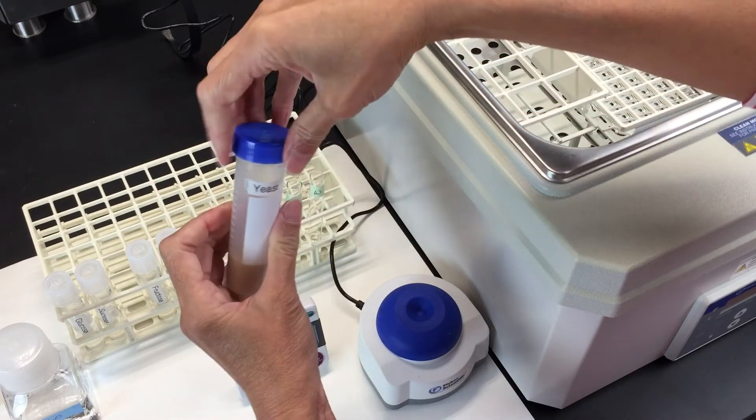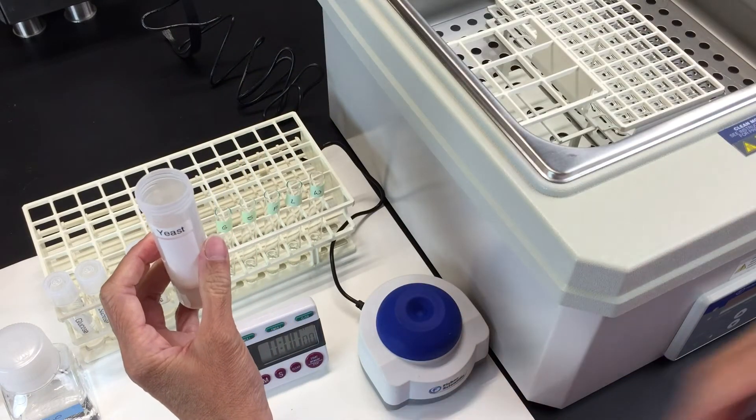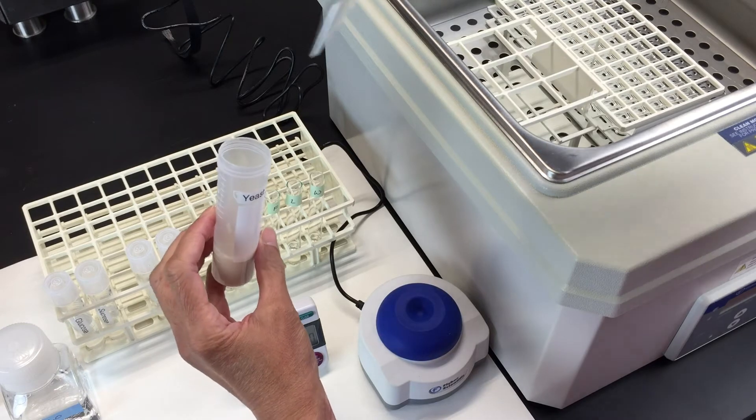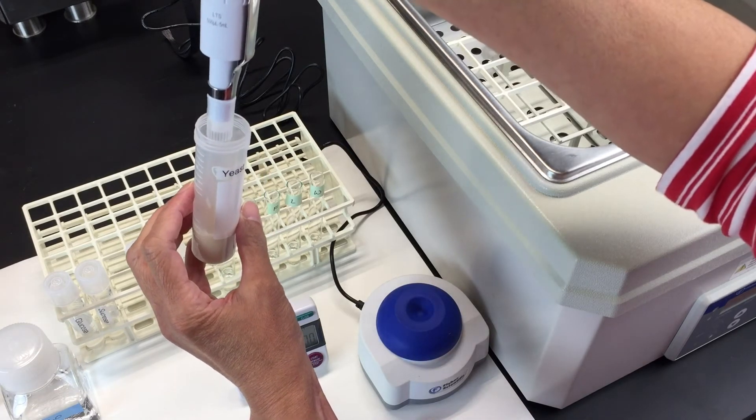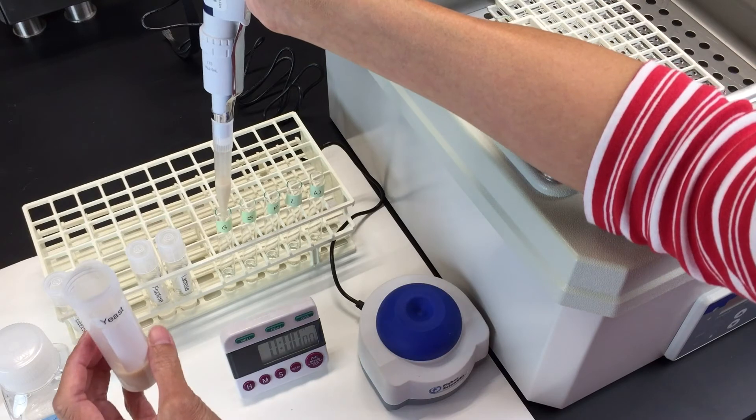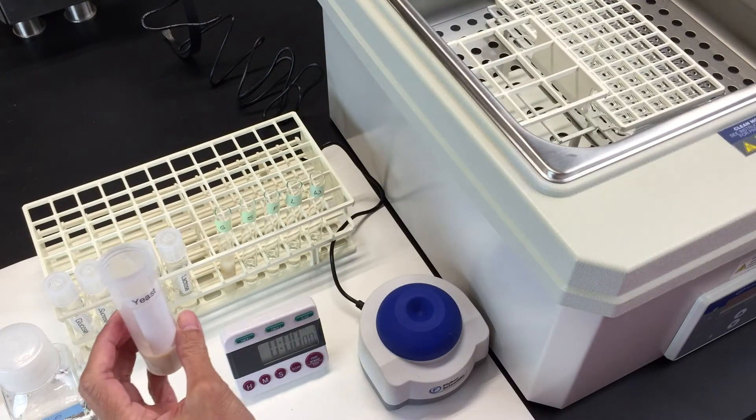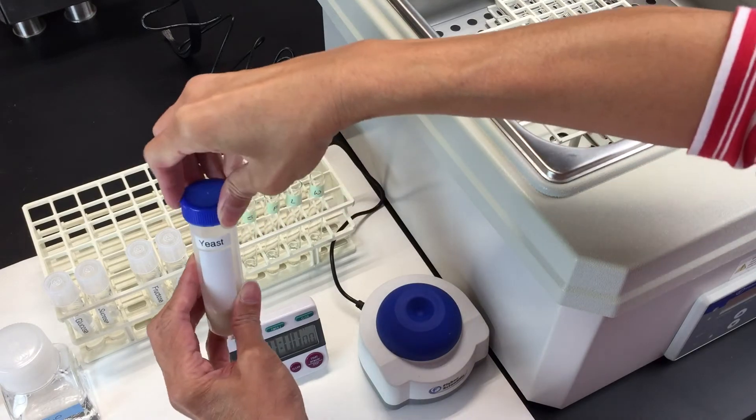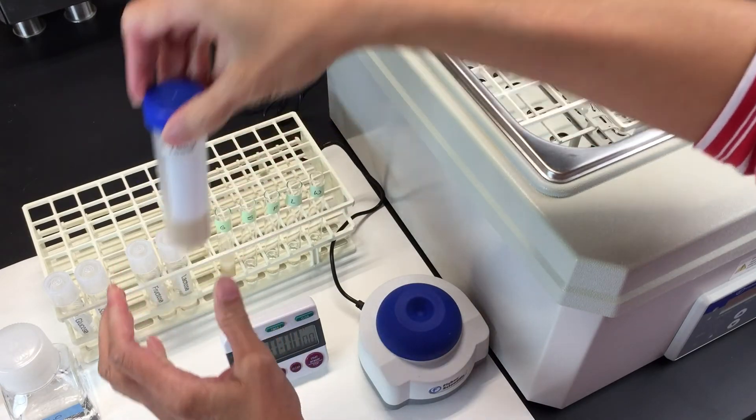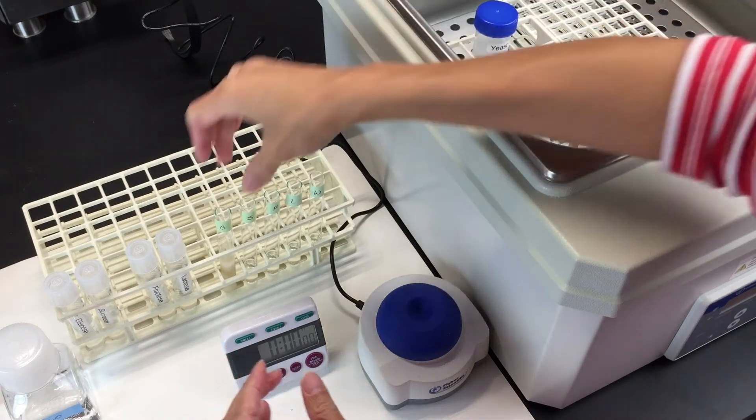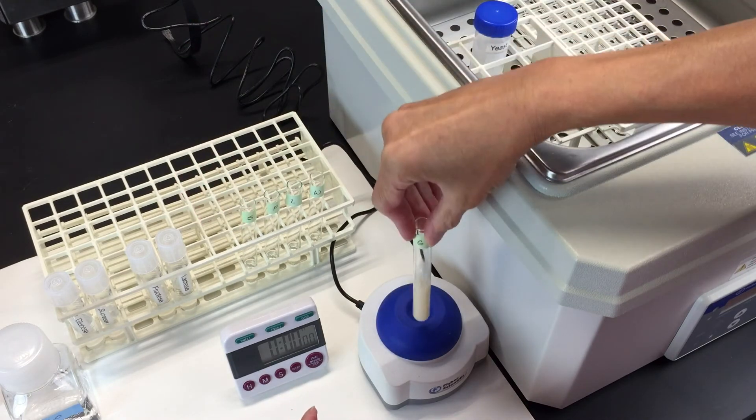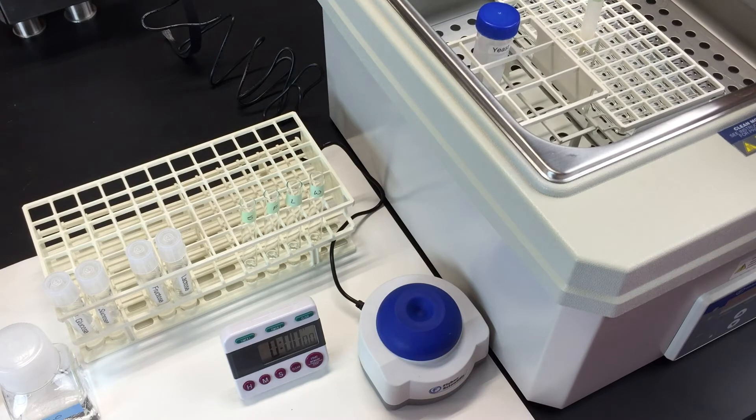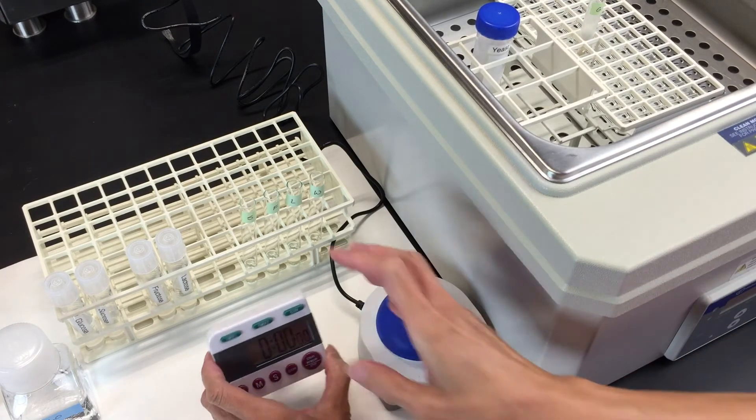You want to start with one tube at a time. So start with your glucose tube, and you want to take two milliliters of your yeast solution and put it into your glucose tube. Put your yeast culture back into the water bath. Take your tube and mix it, and now put it into the water bath to incubate for 10 minutes.